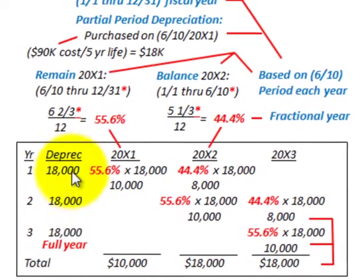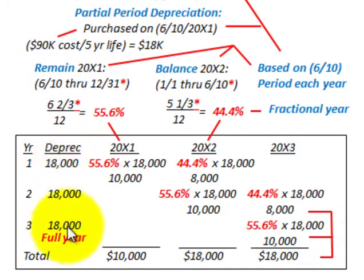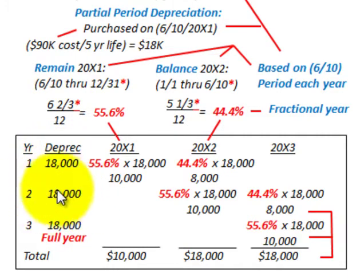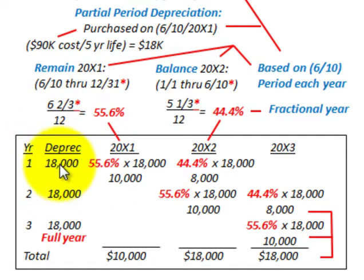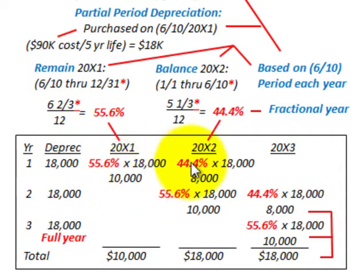To set up your chart, determine the amount of depreciation you'd recognize each year. It doesn't matter if you're using sum-of-years-digits or declining balance — just determine your depreciation amount each year and divide it by your fractional amounts. For straight-line we have $18,000 per year. So for 20x1 you get the fractional amount of 55.6% of $18,000, which equals $10,000. The remaining fractional amount goes into 20x2 — 44.4% of $18,000 equals $8,000.